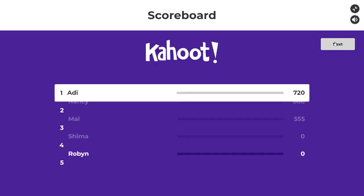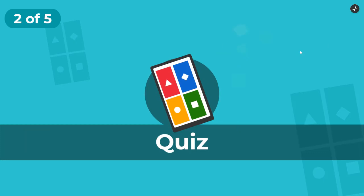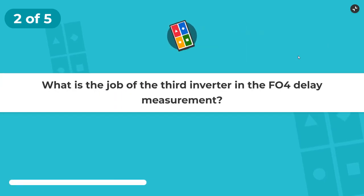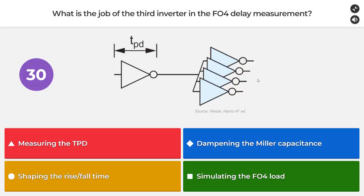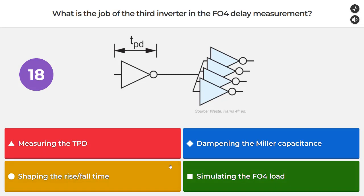With that, we go to the second question: what is the job of the third inverter in the fan-out-4 delay measurement? Is it to measure the TPD, dampen the Miller capacitance, shape the rise/fall time, or simulate the fan-out-4 load? Since shaping the rise/fall time was the previous answer, I'm going to say it's to simulate the fan-out-4 load.